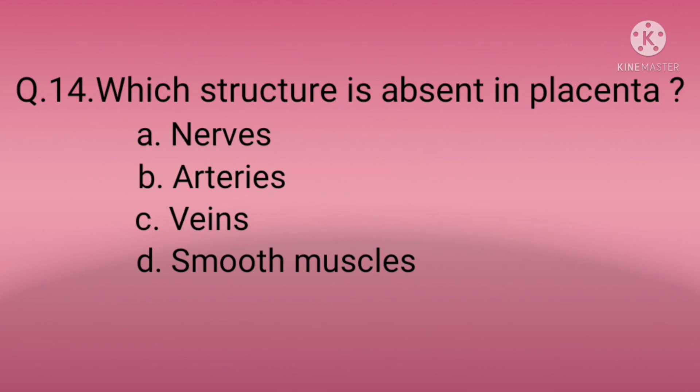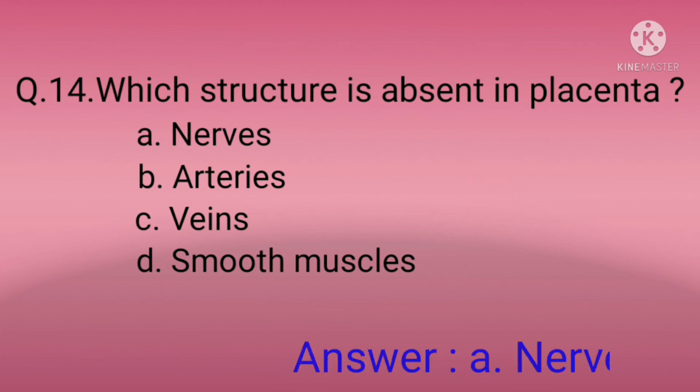Question fourteen: Which structure is absent in the placenta? Option A: Nerves, Option B: Arteries, Option C: Veins, Option D: Smooth muscles. The correct option is A — nerves.